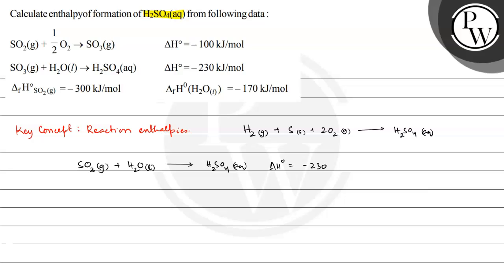Now the reactants produced in this reaction, we need formation enthalpies. Here SO3 gas is produced in the first equation from sulfur dioxide and oxygen, so we can add that. SO2 gas plus half O2 gas giving SO3 gas. This is equal to delta H0 equals minus 100 kJ per mole.